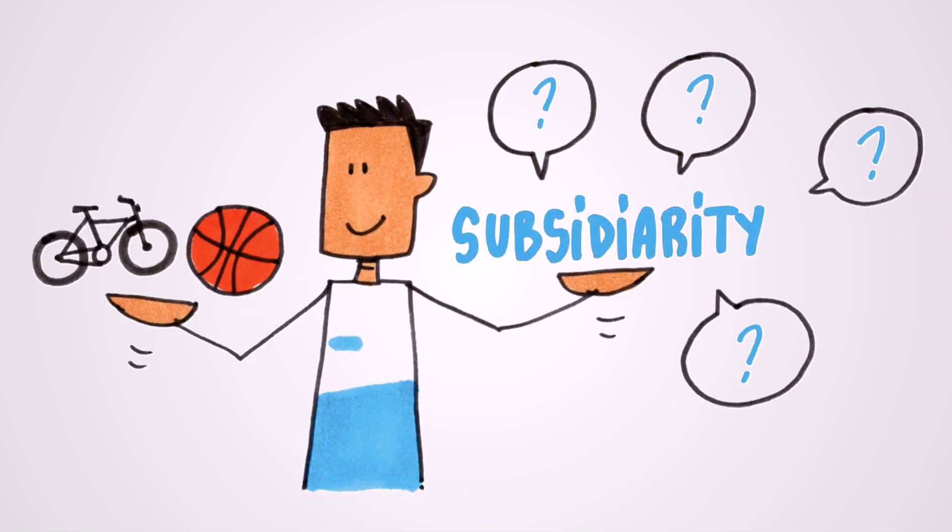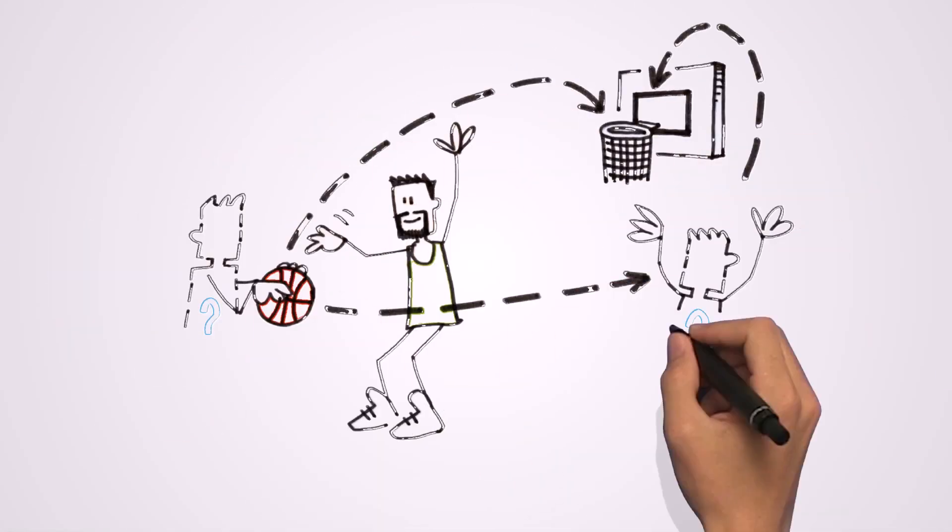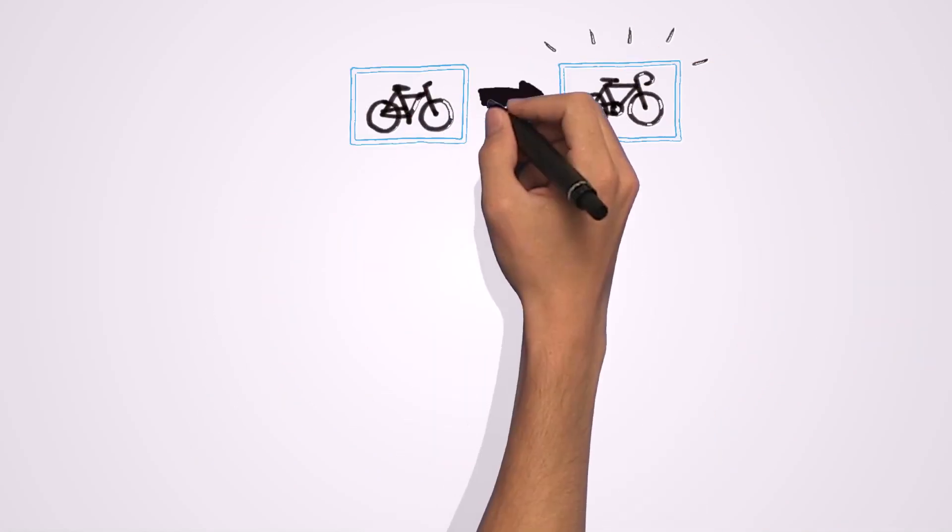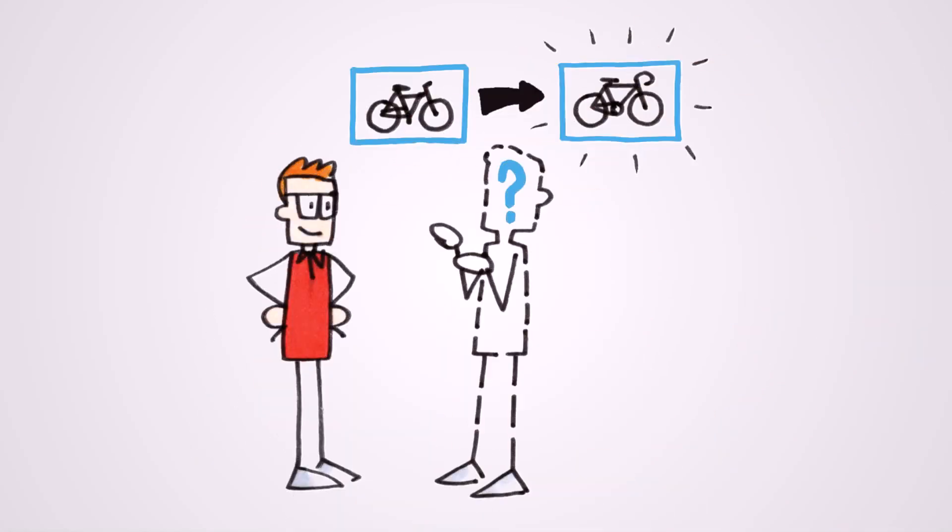With these examples, subsidiarity asks questions. Who should decide to pass the ball or to shoot? Who should decide to exchange the bike of the customer for another one?